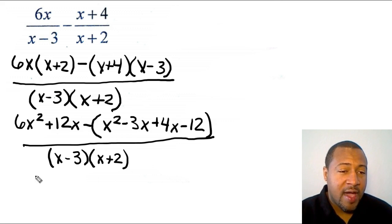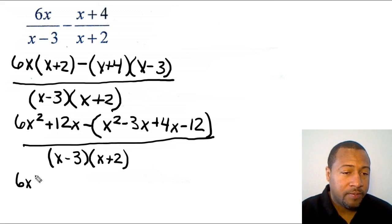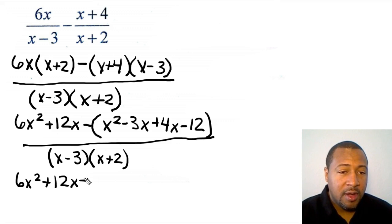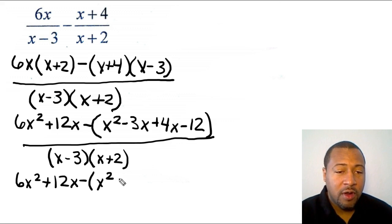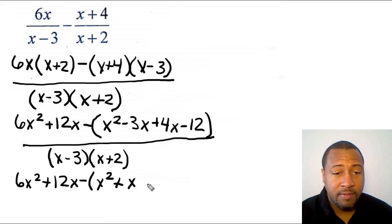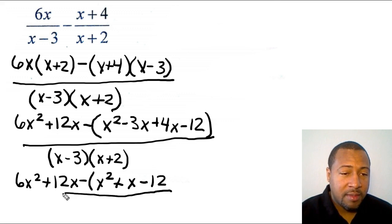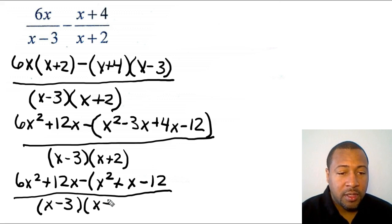I bring down 6x² and then simplify inside the parentheses: x² remains, and negative 3x plus 4x gives me positive x. I also bring down the 12, and then I bring down the same denominator, which is (x − 3)(x + 2).